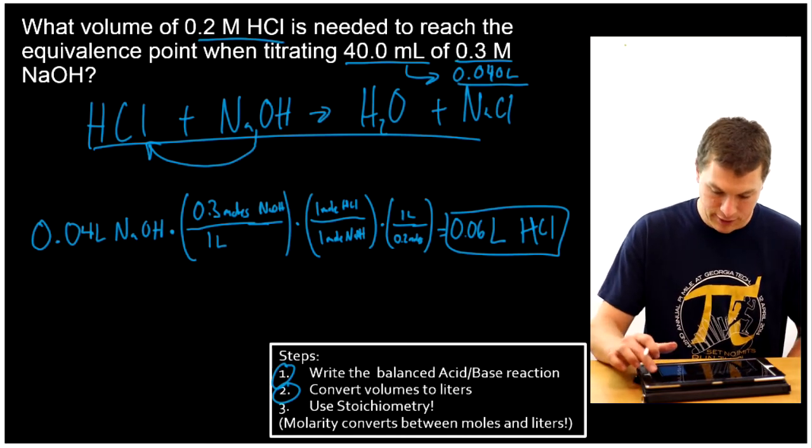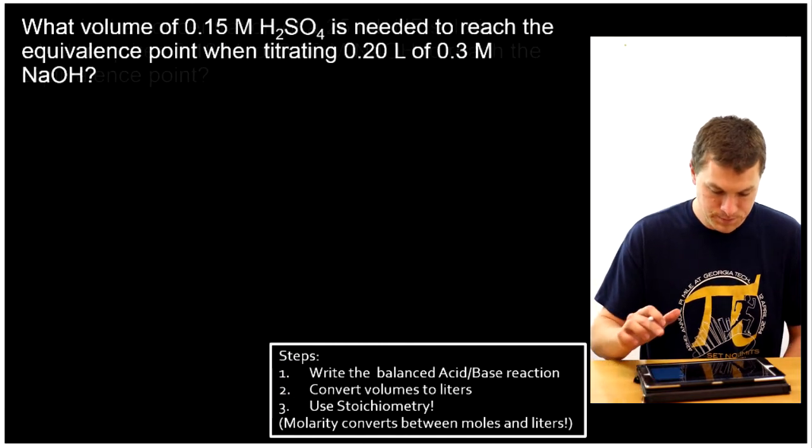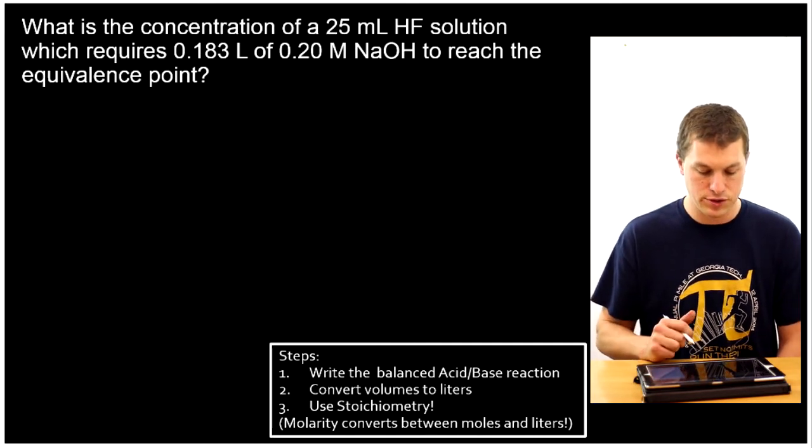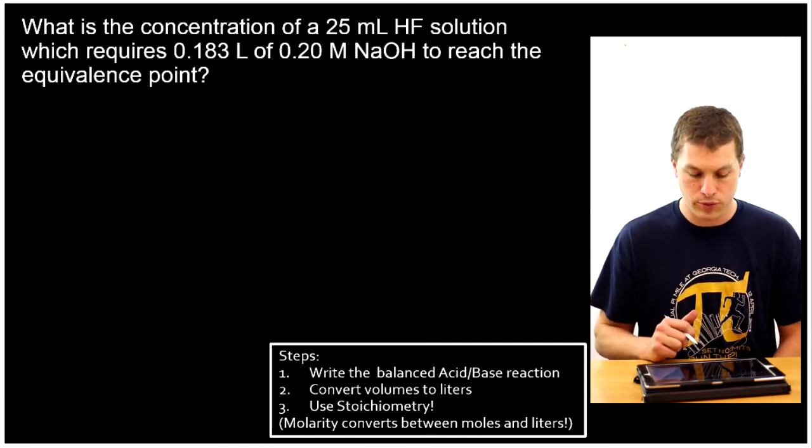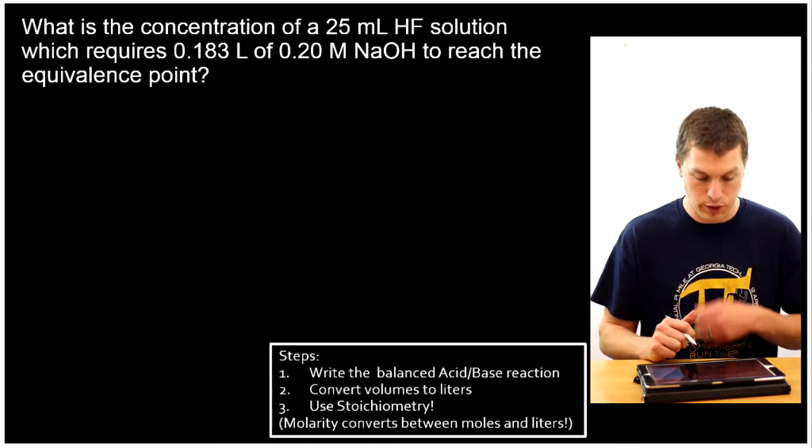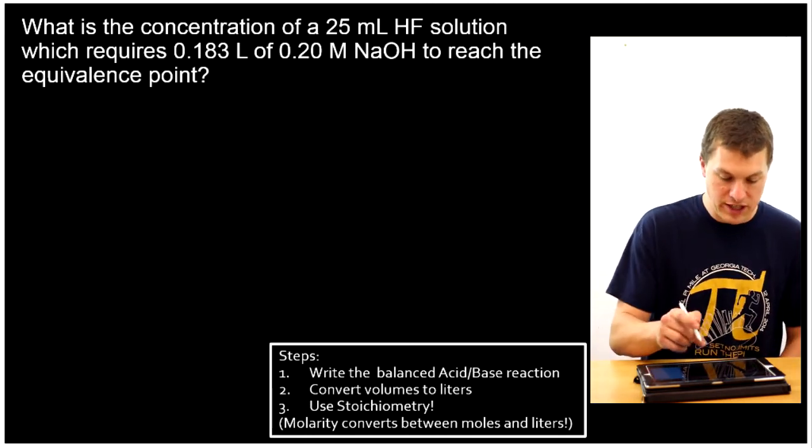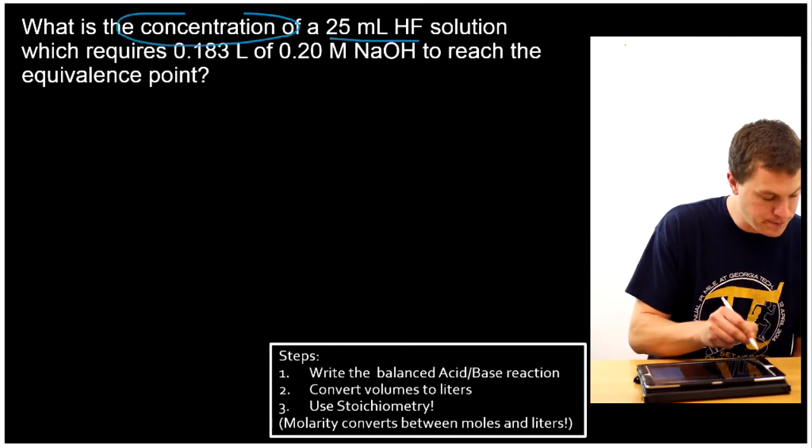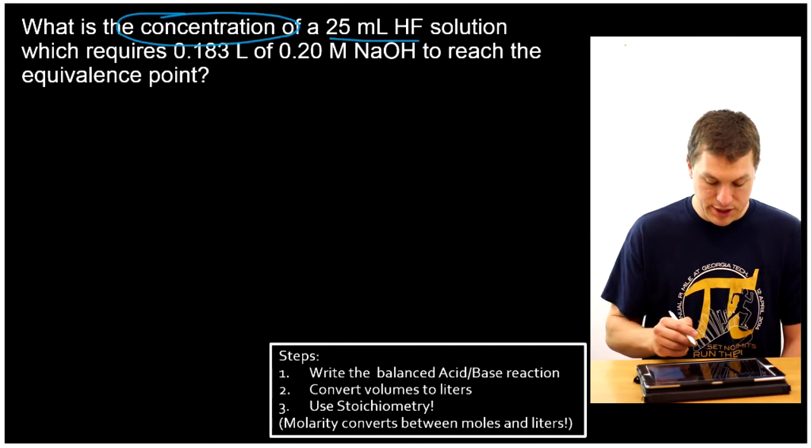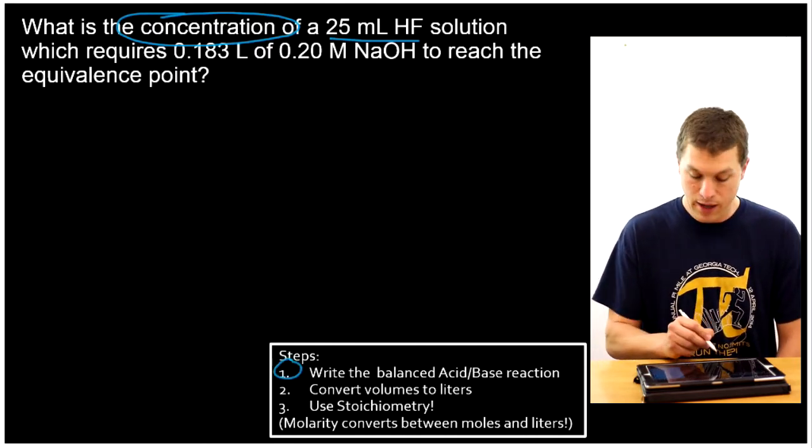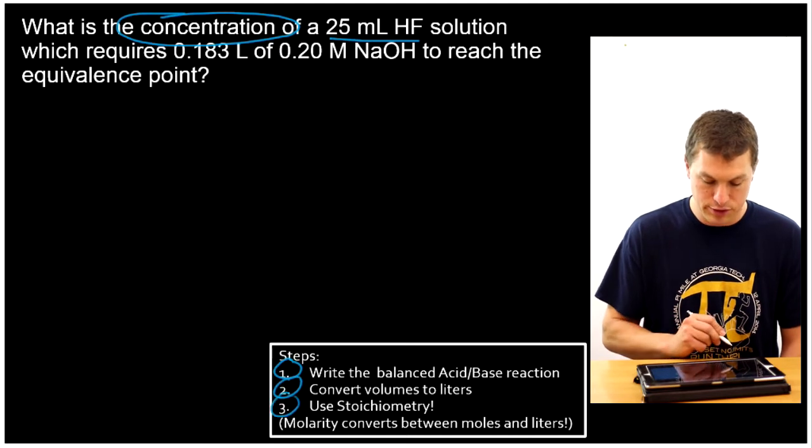Alright, let's look at the second type of calculation. This says, what is the concentration of a 25 milliliter HF solution, which requires 0.183 liters of 0.2 molar NaOH to reach the equivalence point. So this is a little different, now we've been given our volume and we want concentration. And what we're going to do here, is we're still going to start by writing our balanced acid base reaction.